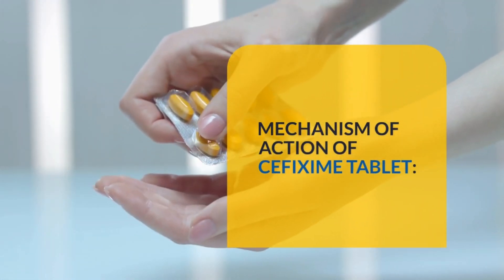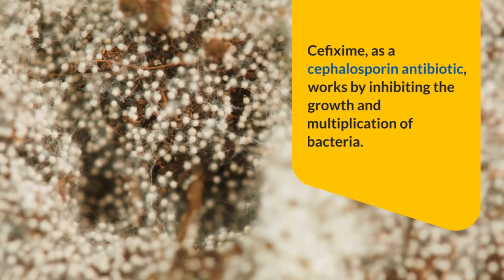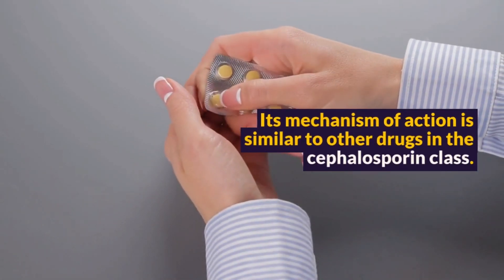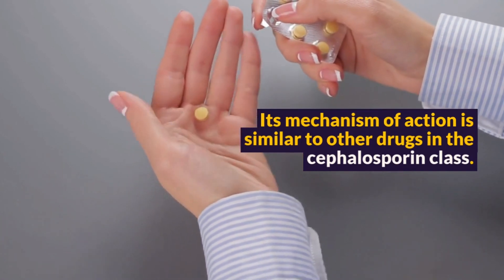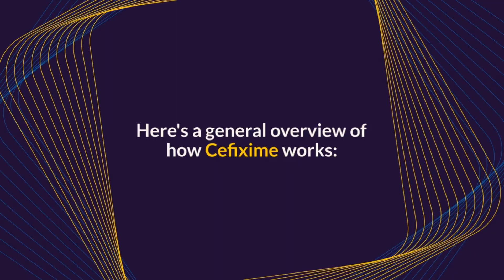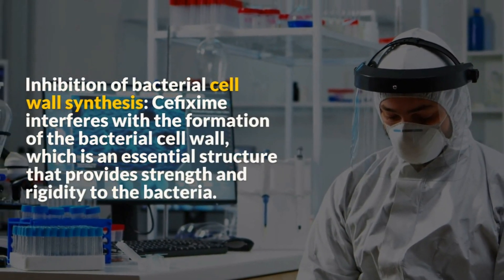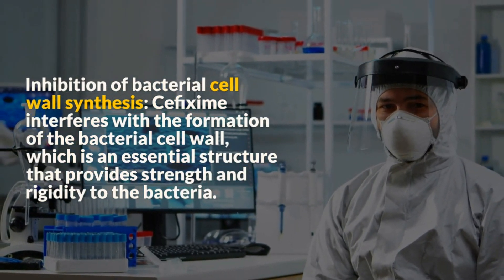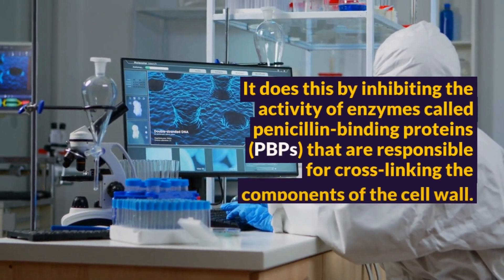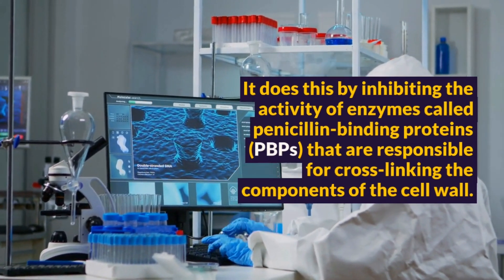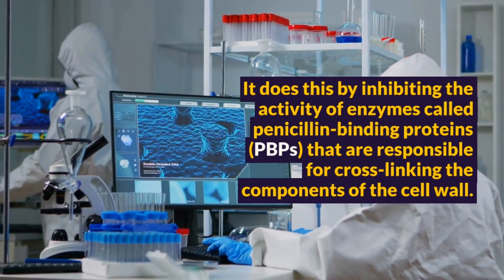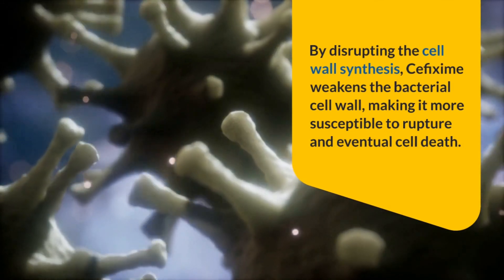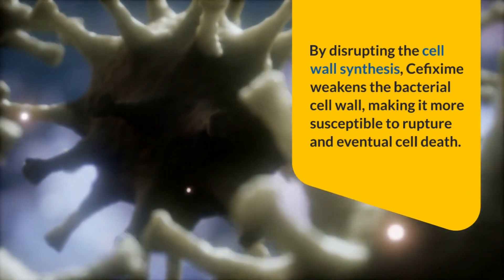Mechanism of Action of Suffixime Tablet. Suffixime, as a cephalosporin antibiotic, works by inhibiting the growth and multiplication of bacteria. Its mechanism of action is similar to other drugs in the cephalosporin class. Here's a general overview of how Suffixime works. Inhibition of bacterial cell wall synthesis: Suffixime interferes with the formation of the bacterial cell wall, which is an essential structure that provides strength and rigidity to the bacteria. It does this by inhibiting the activity of enzymes called penicillin-binding proteins that are responsible for cross-linking the components of the cell wall. By disrupting the cell wall synthesis, Suffixime weakens the bacterial cell wall, making it more susceptible to rupture and eventual cell death.